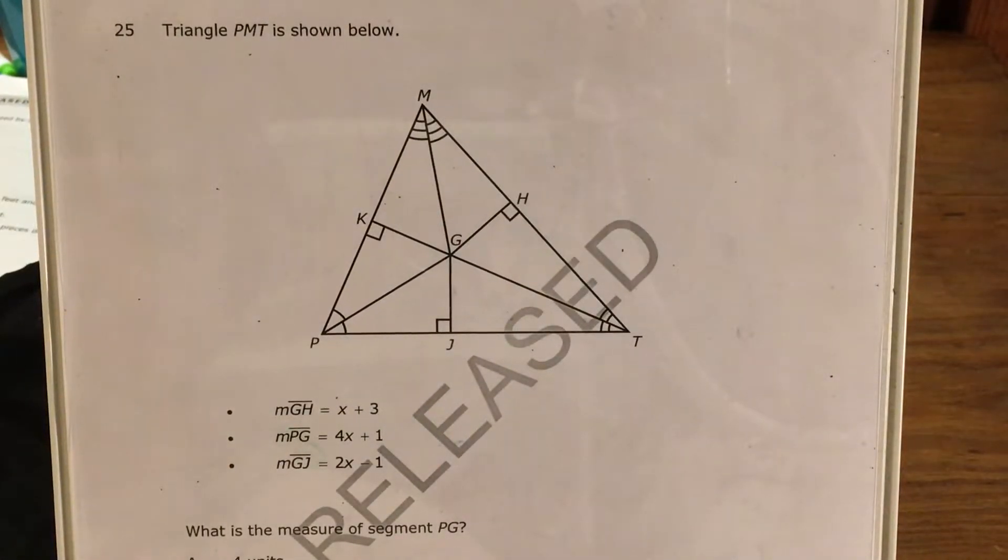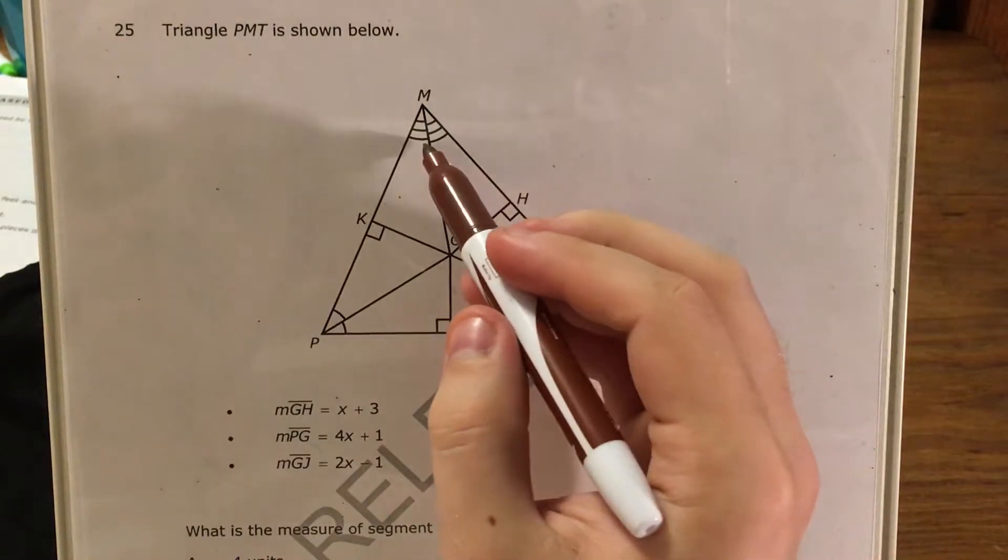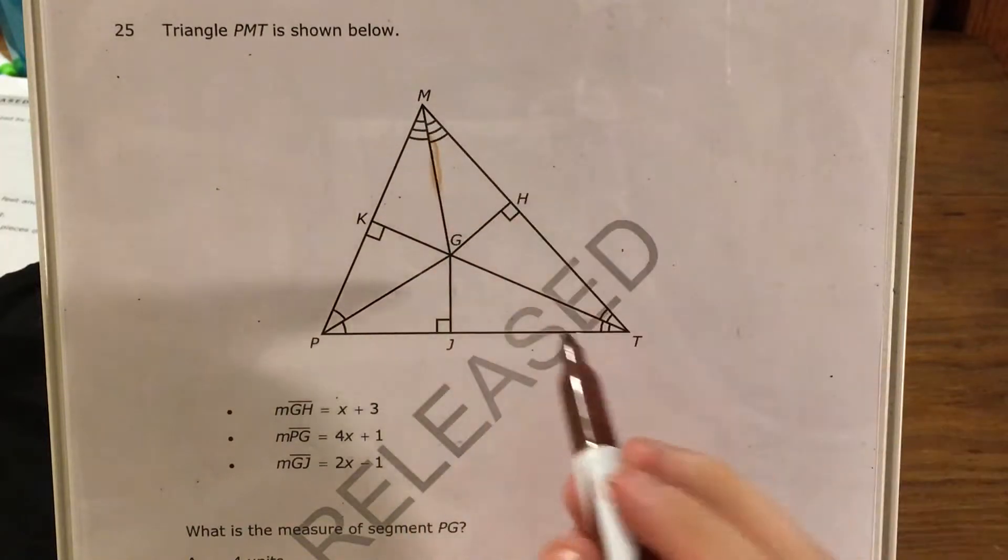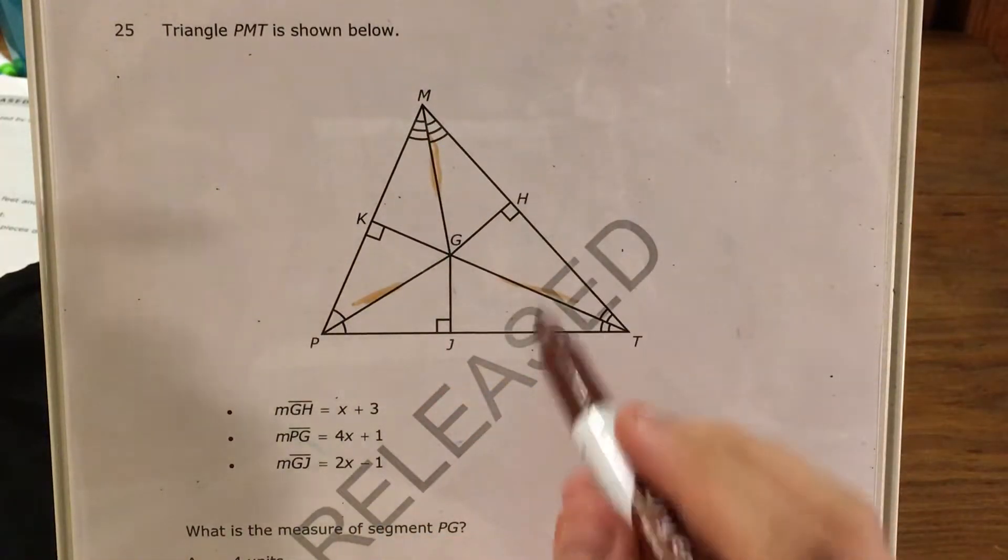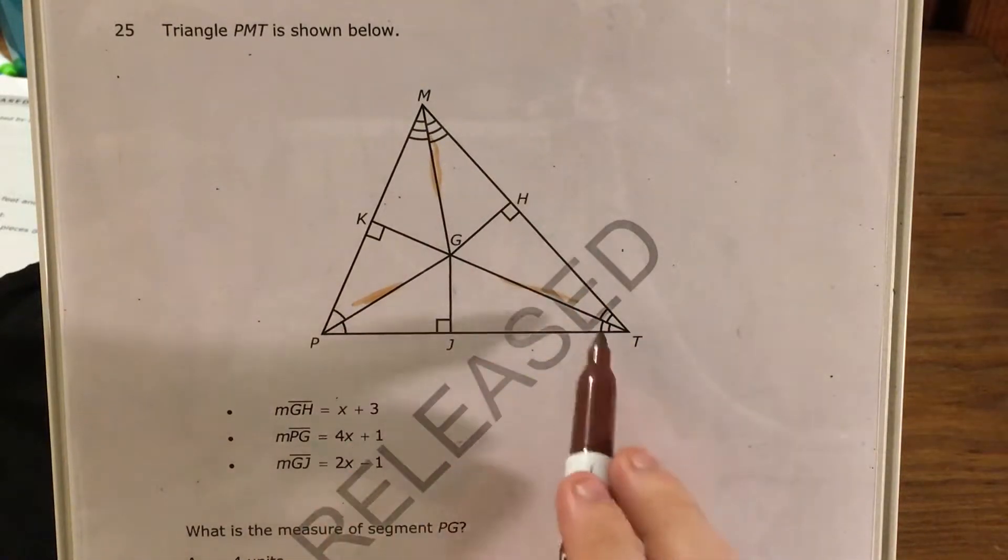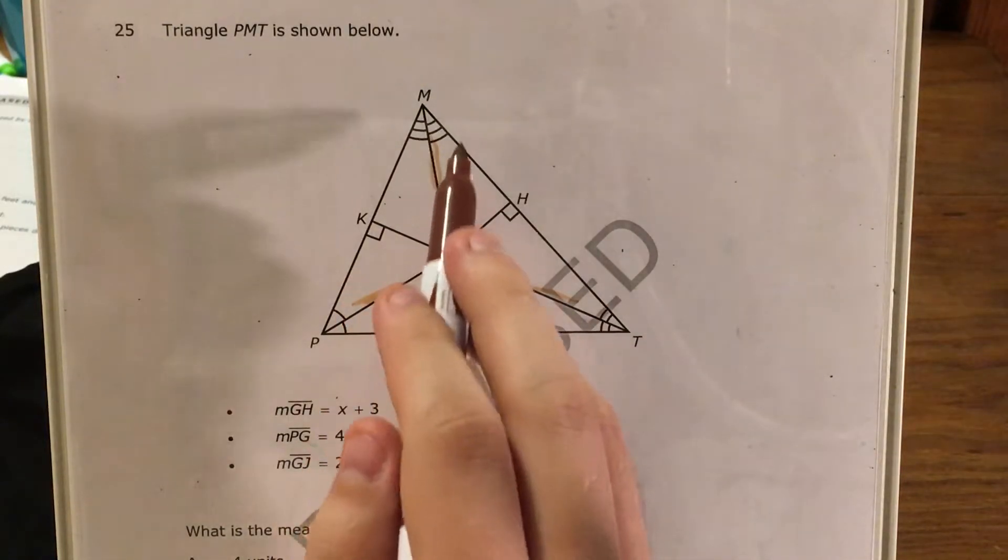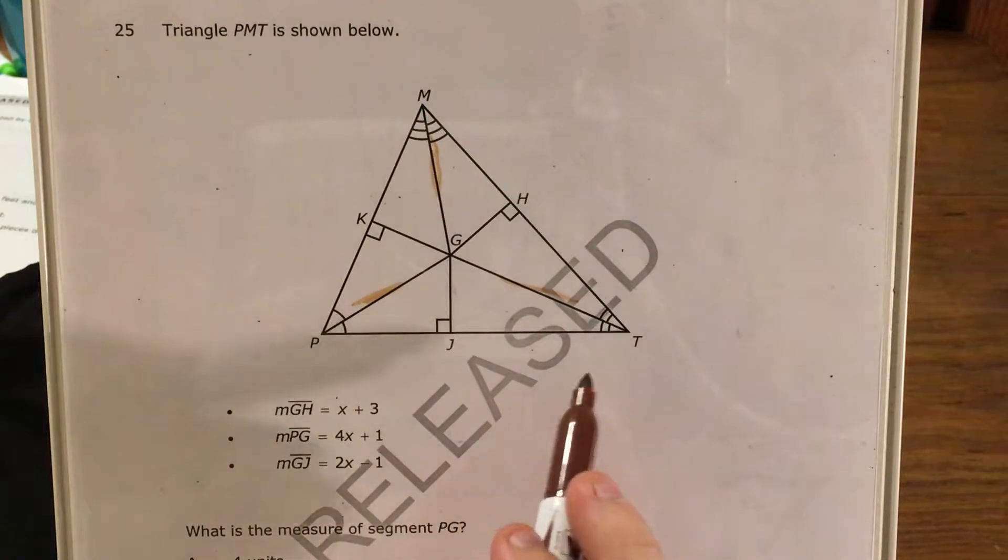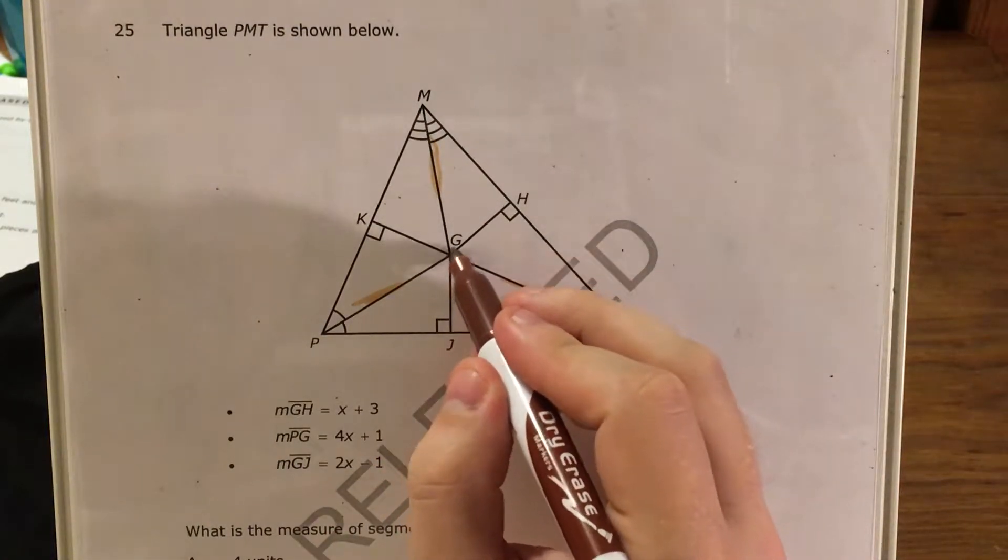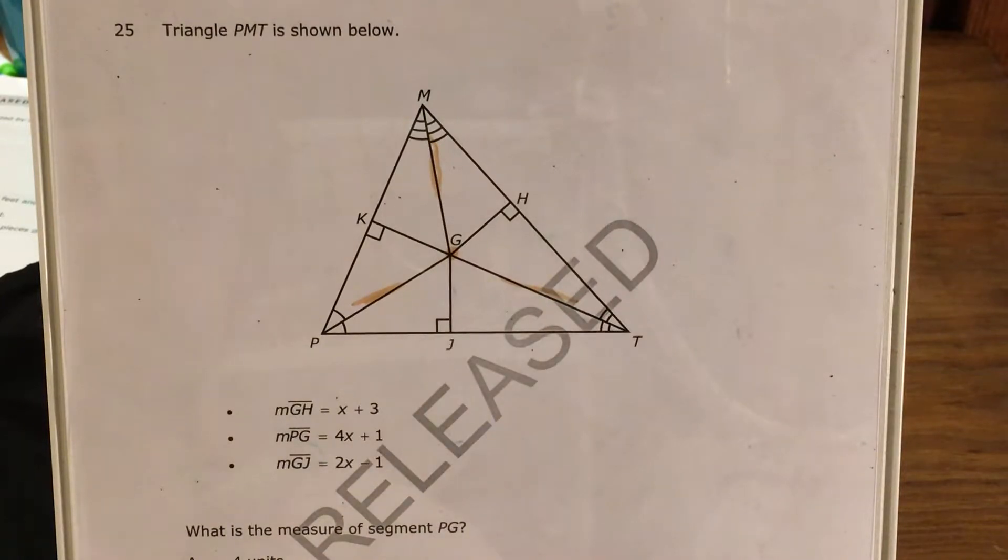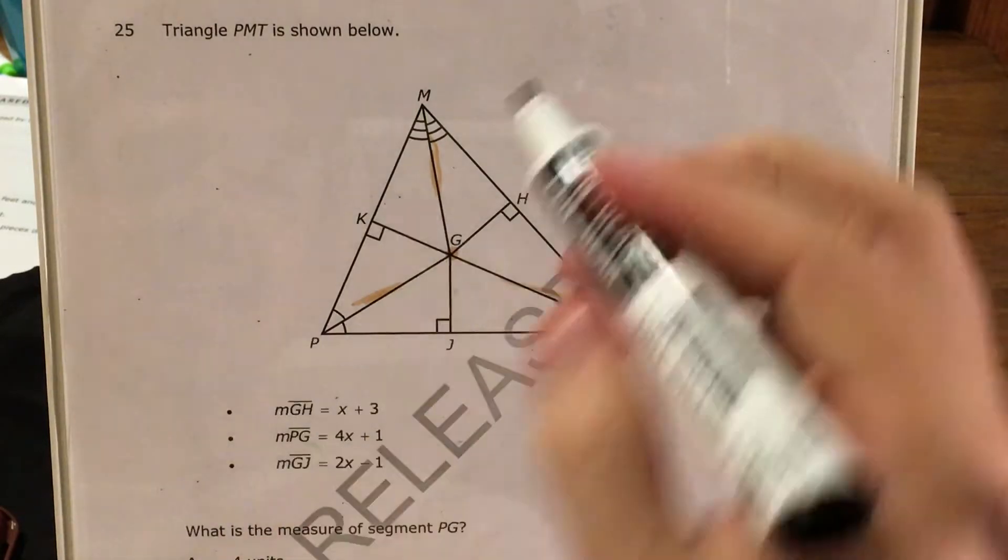Now I want to start by recognizing that these MG, GT, and PG are all angle bisectors. You can see from the little curve markings that they all cut angle M, angle P, or angle T in half, and whenever the three angle bisectors meet in the center, they create what is called an incenter.